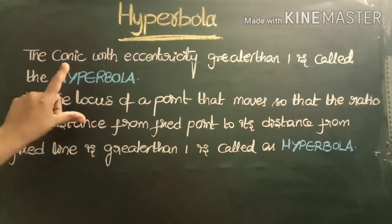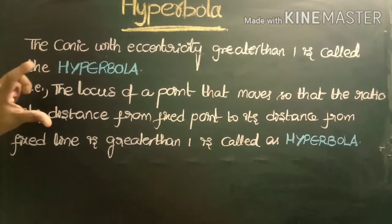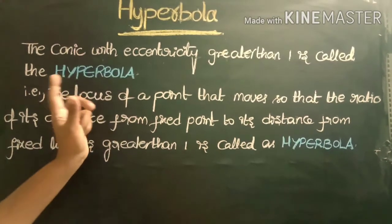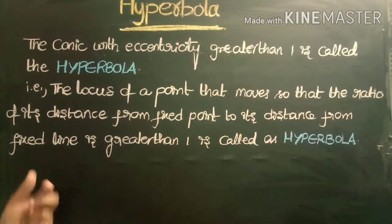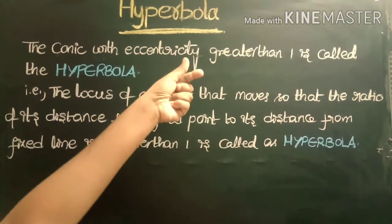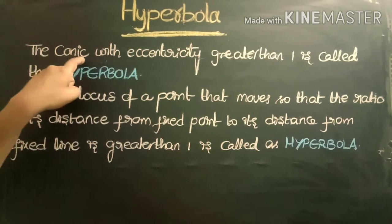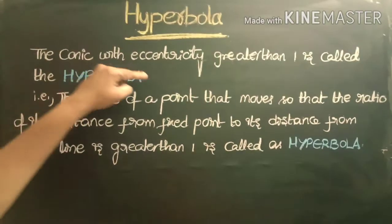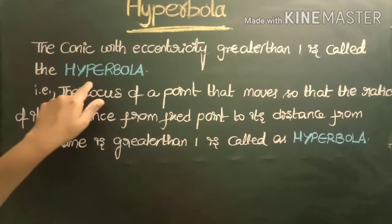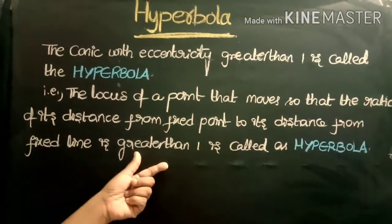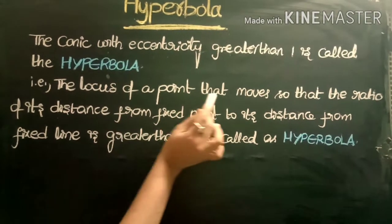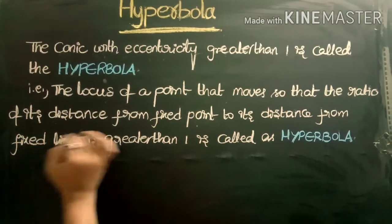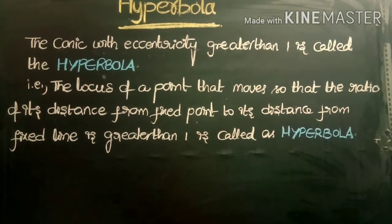The next chapter is hyperbola, one of the conics. The conic with eccentricity greater than one is called the hyperbola. We already know that the conic with eccentricity equal to one is called the parabola, and the conic with eccentricity less than one is called the ellipse. The locus of a point that moves such that the ratio of its distance from a fixed point to its distance from a fixed line is greater than one is called the hyperbola.